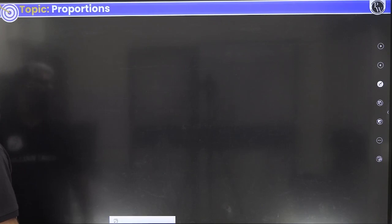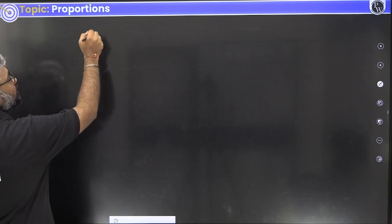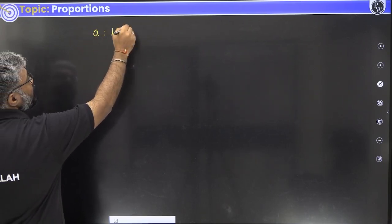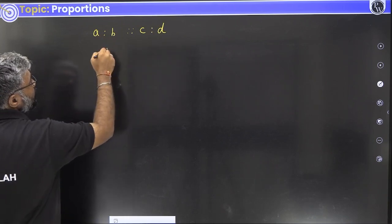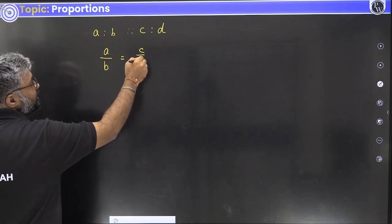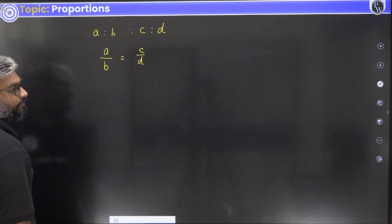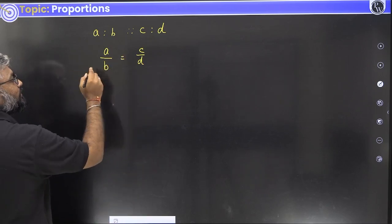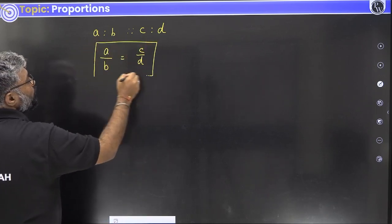What do we mean when we say that two ratios are proportionate to each other? So if I say A is to B is proportional to C is to D, what we mean is the ratio of A and B, A upon B, is the same as C upon D. Now if you look at this, this can be formed into multiple cases.